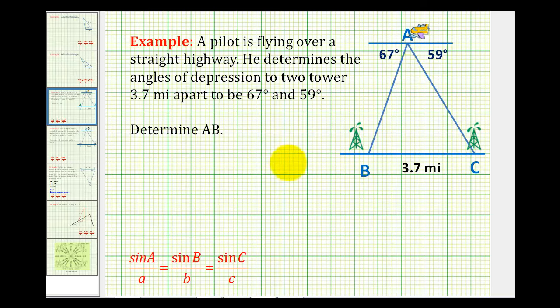But the first one is to determine the length of segment AB or the distance from point A to point B. Let's start by determining all the information we can about this triangle. Since this highway is straight, and we'll assume the plane is flying straight, we have two parallel segments. And if we have parallel lines cut by a transversal, then alternate interior angles are equal or congruent.